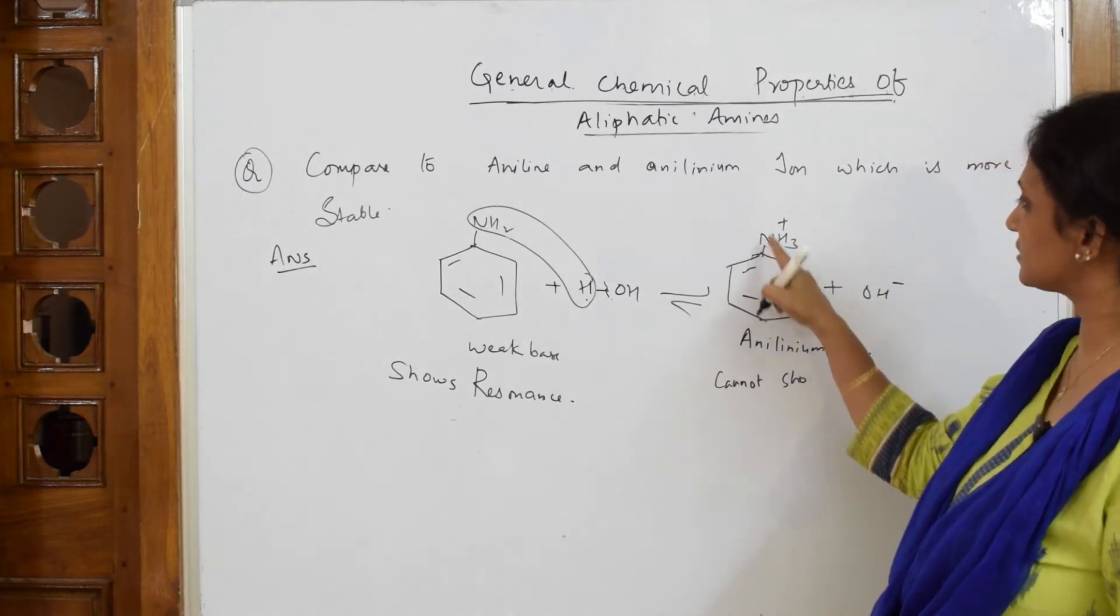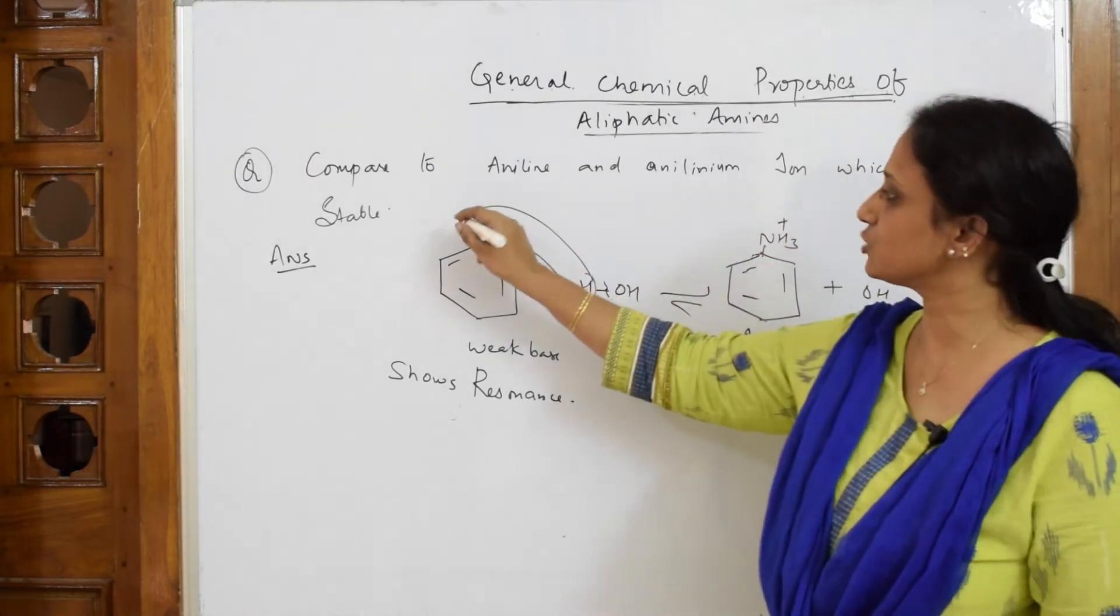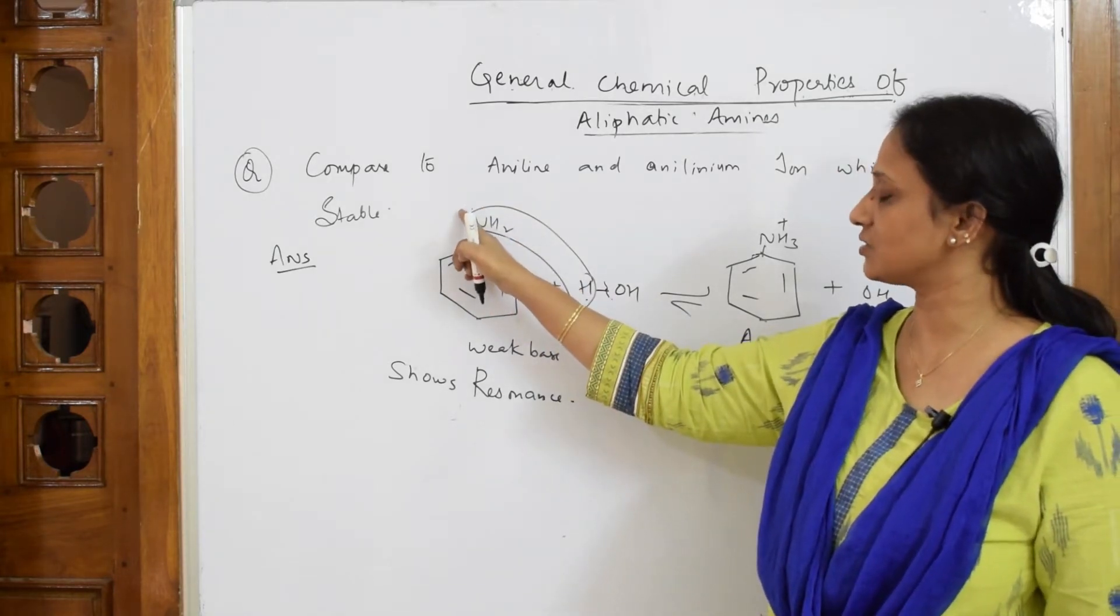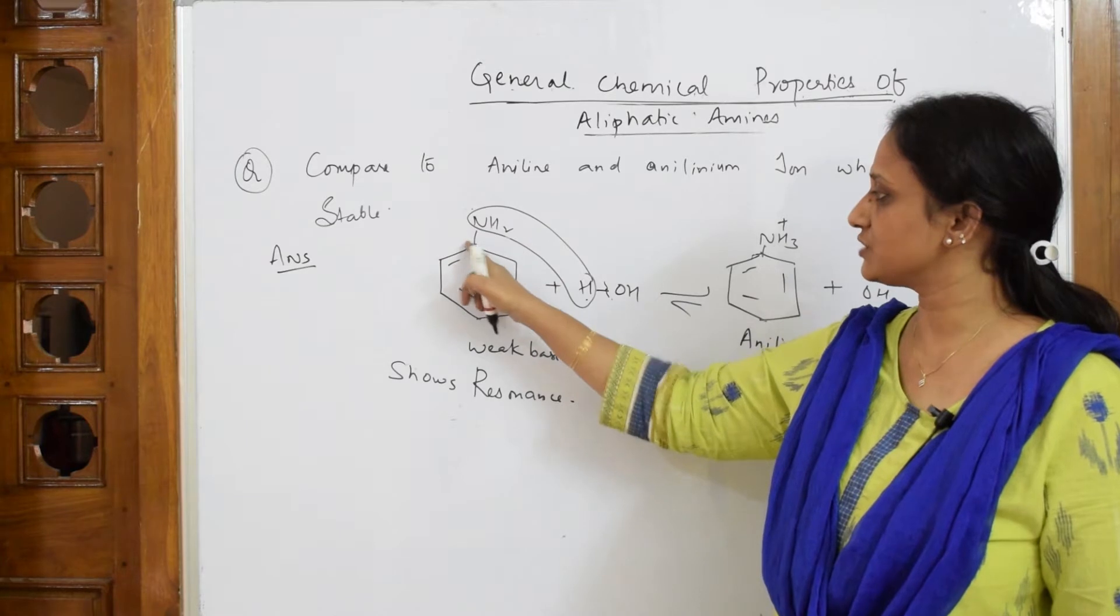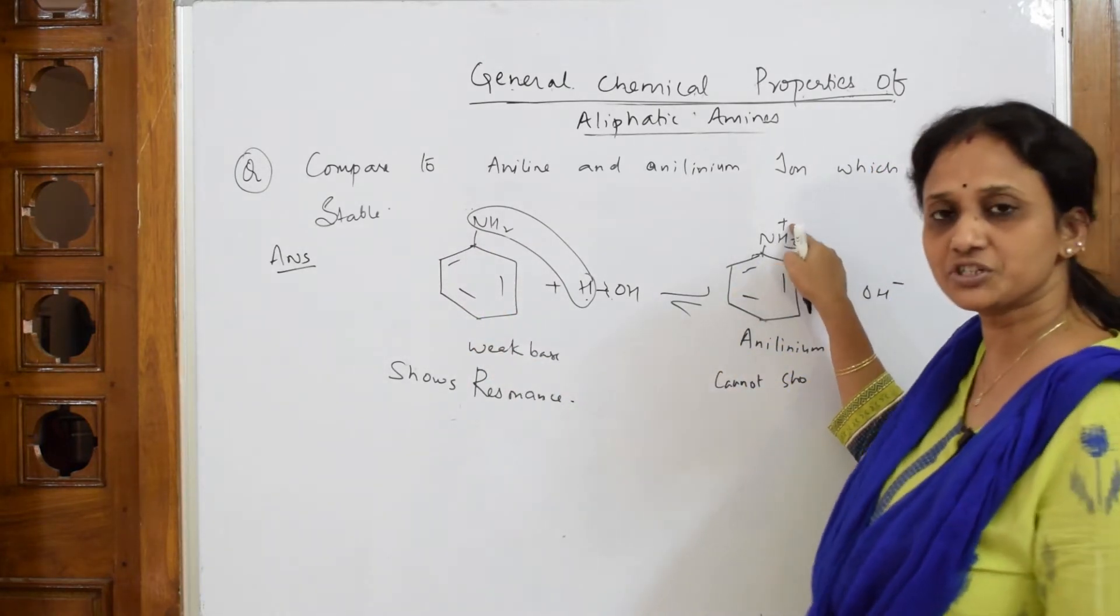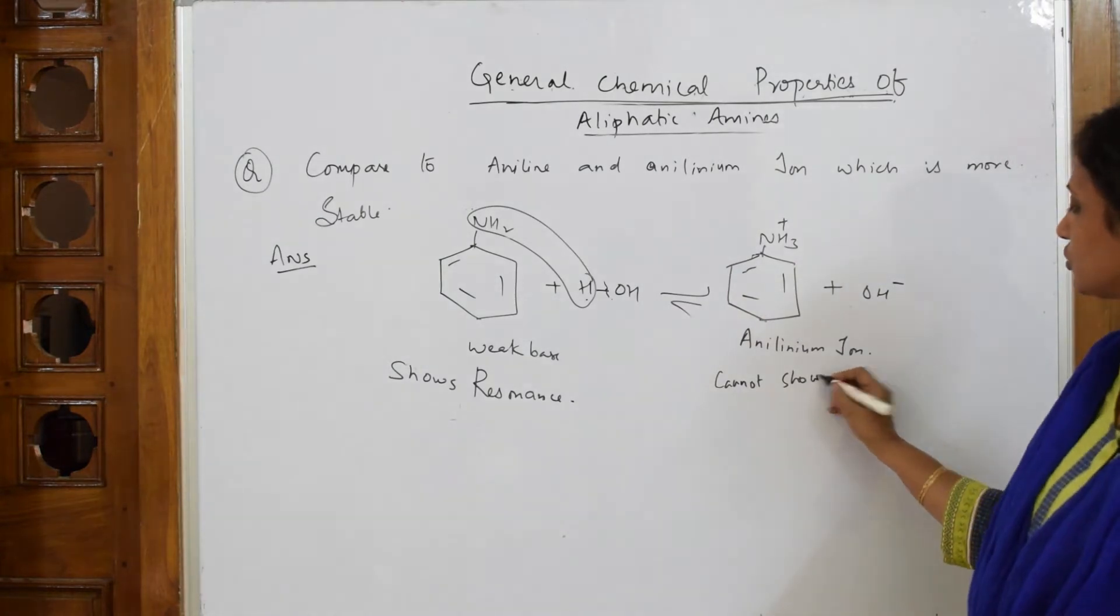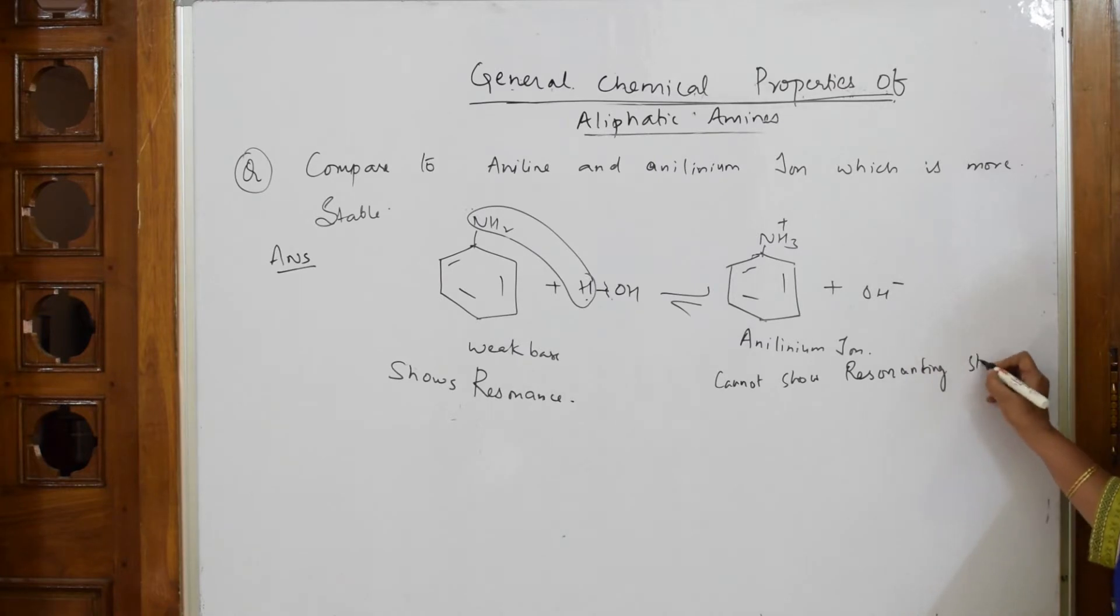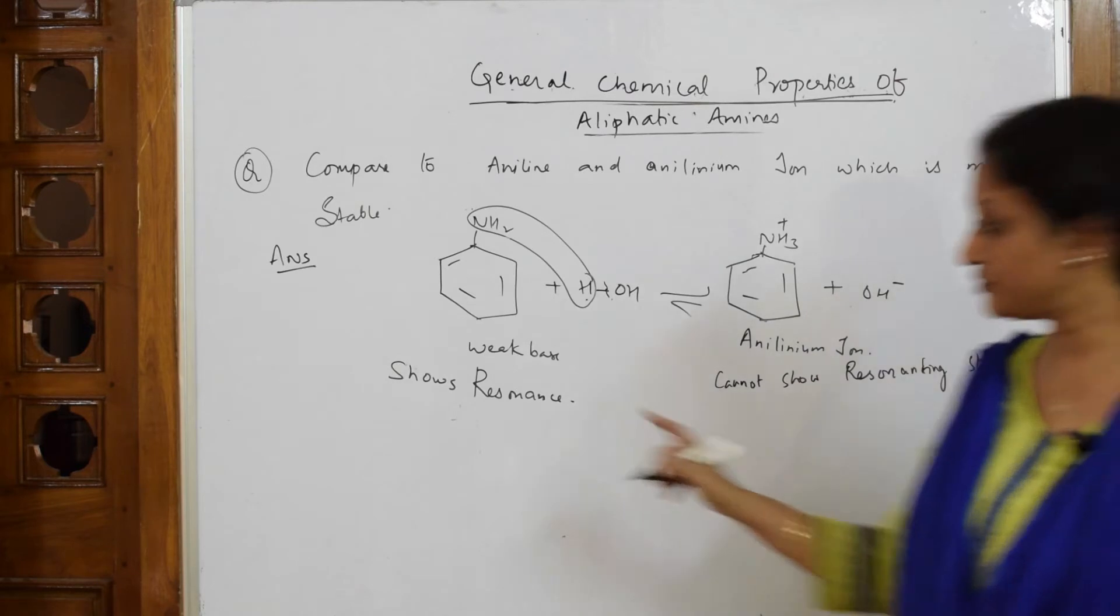There is a positive charge already. If there's a lone pair of electrons, that's different - the electrons can shift. But here, it has already attained a positive charge, it is deficient of electrons, so it cannot show resonating structures.